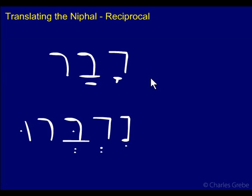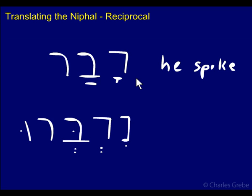An example of that would be davar. In the Qal, davar means 'he spoke.' In actual fact it never occurs in the perfect in the Qal — I'll just put this in brackets here. In the Qal it shows up just a few times as an infinitive construct and a participle. It's mostly in the Piel, which is the binyan we haven't come to yet. But that's how this verb is normally used — deber.